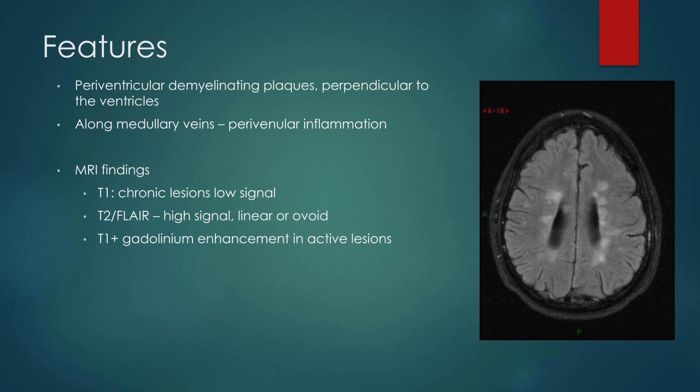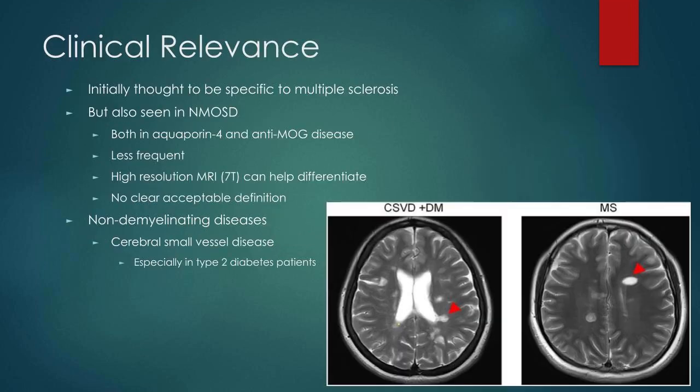On T2 FLAIR, which is what we're most used to looking at, they are high signal and usually a linear or ovoid type. On gadolinium-enhanced T1, if the lesion is active it will enhance, and that can help us monitor the stages or activity of disease.